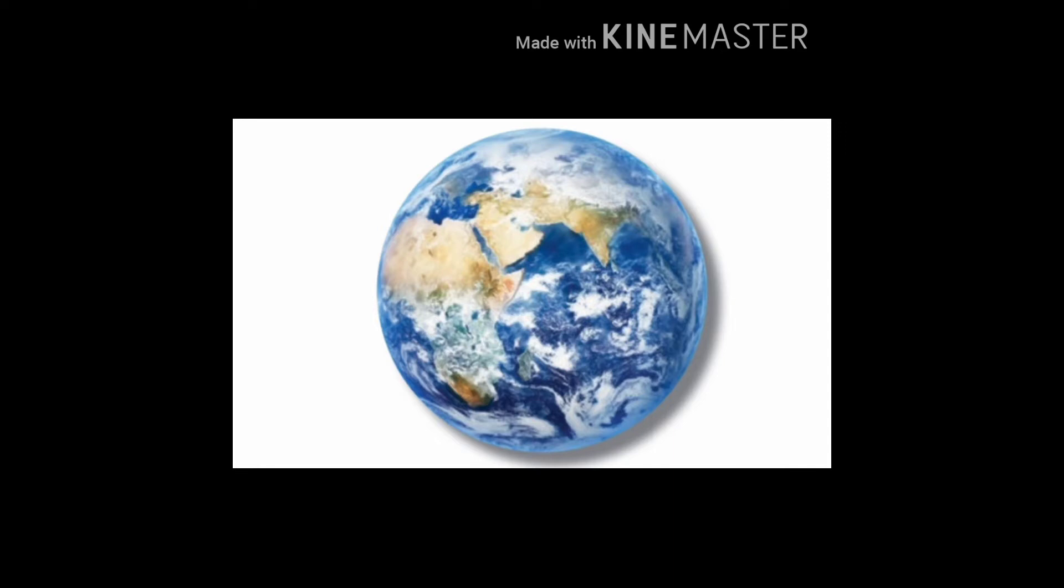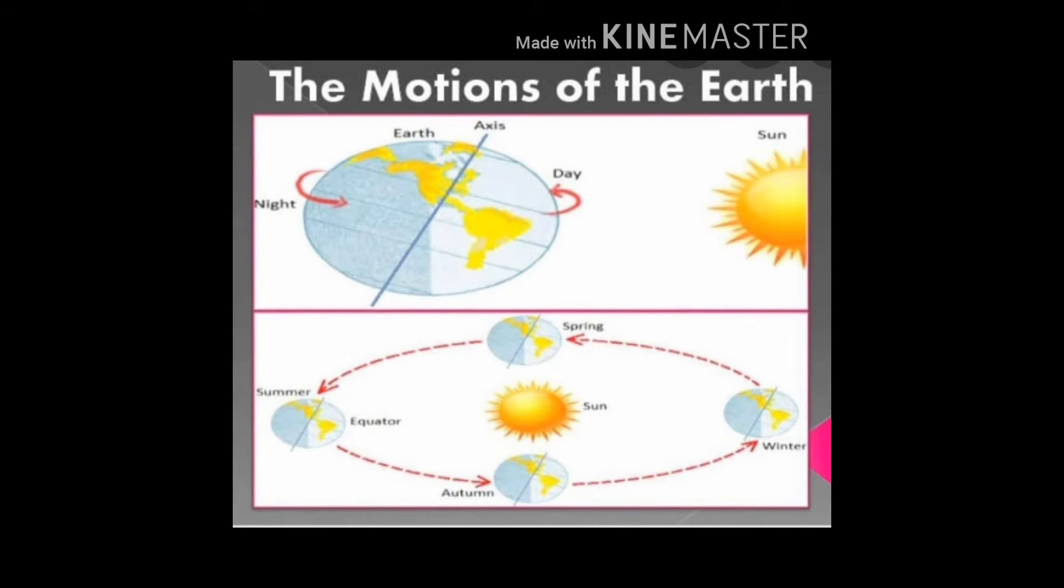Do you know where do we live? We live on the surface of the earth. Then how do all the things, buildings, humans, animals and plants stand erect and firm? It is because of the two movements of the earth: rotation and revolution.